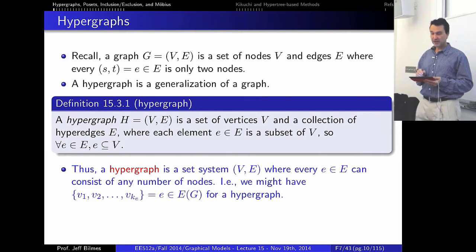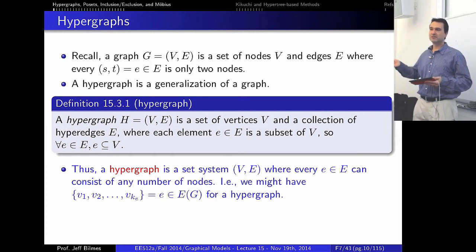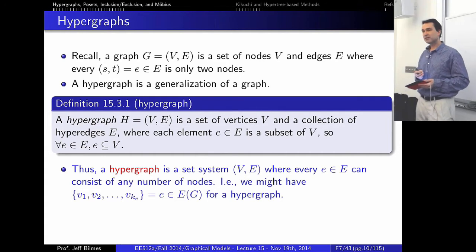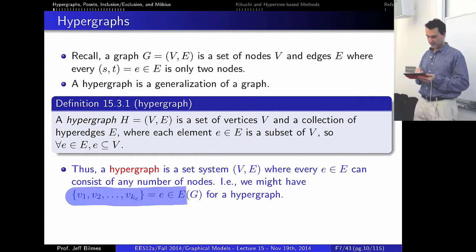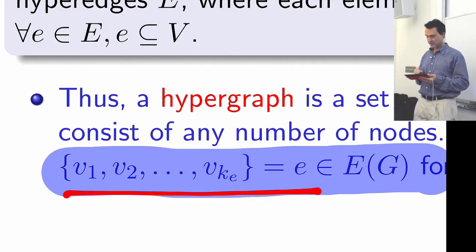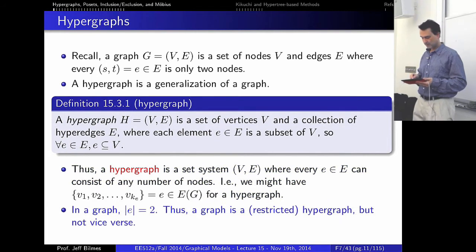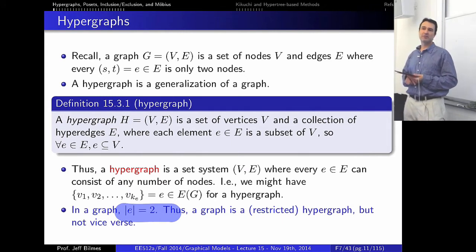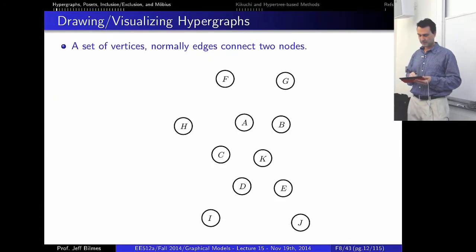In some sense, a hypergraph can be seen as a set system — a set and a set of subsets. Any graph is a set system. In a hypergraph, any one of these subsets can be any set of nodes. In a regular graph, the size of each edge is two, so therefore any graph is a hypergraph, but not vice versa.